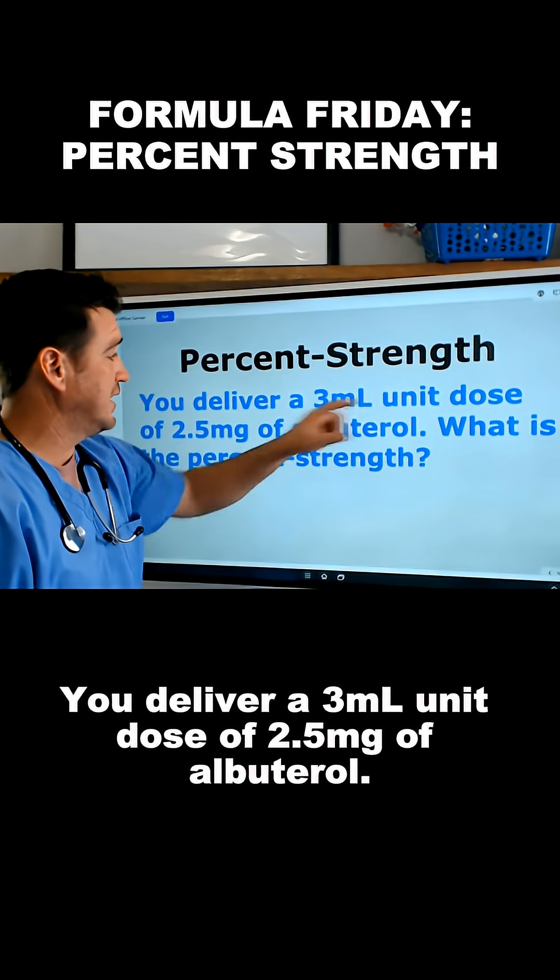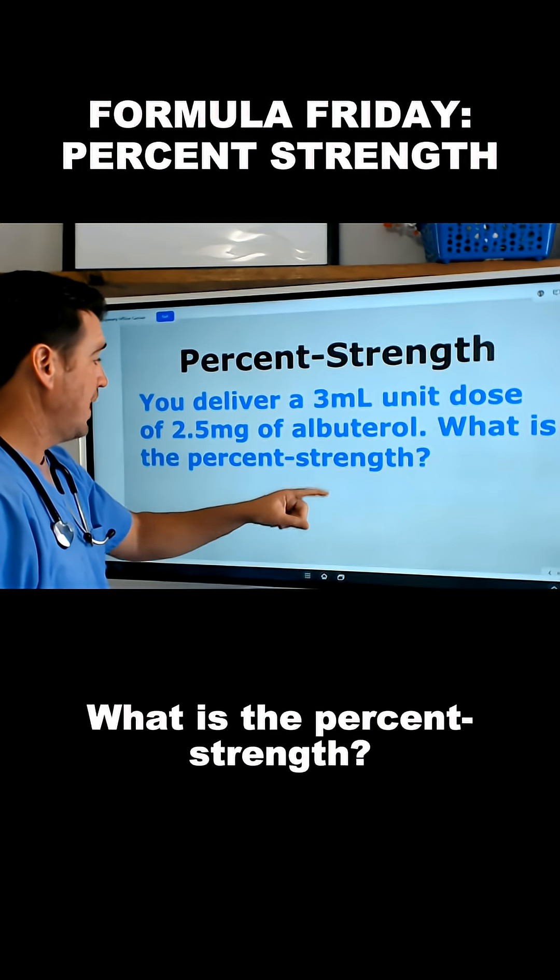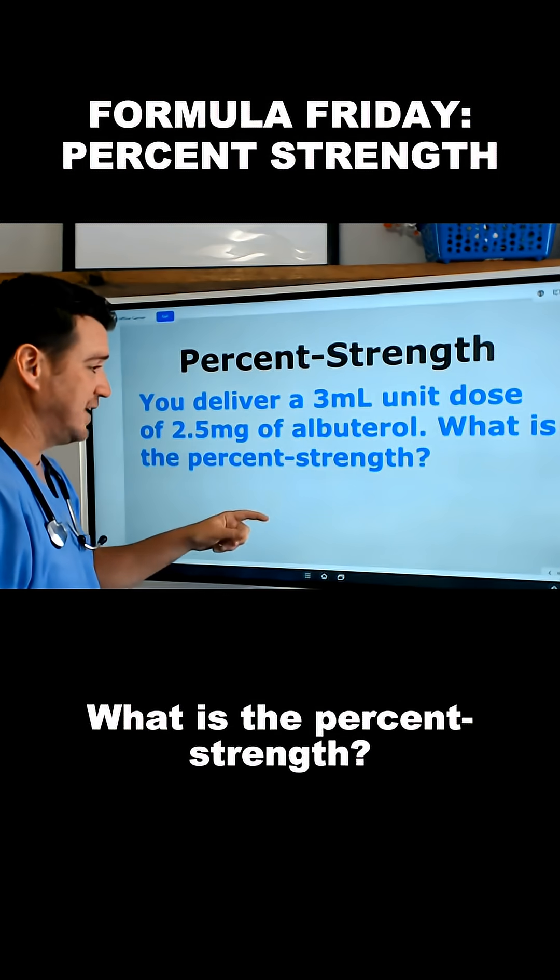You deliver a 3 ml unit dose of 2.5 milligrams of albuterol. What is the percent strength?